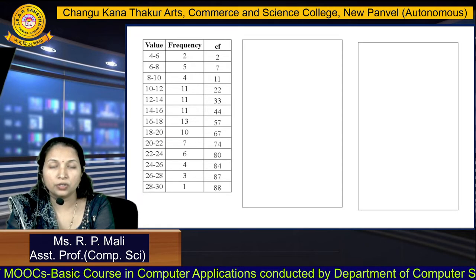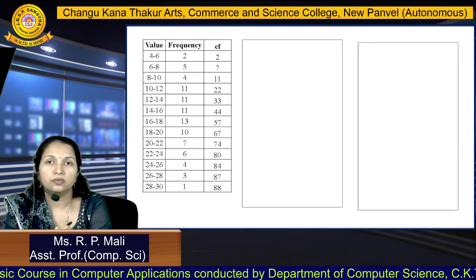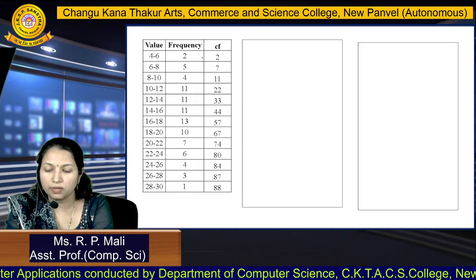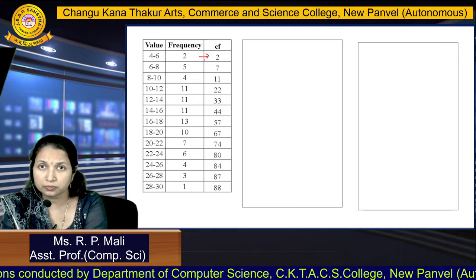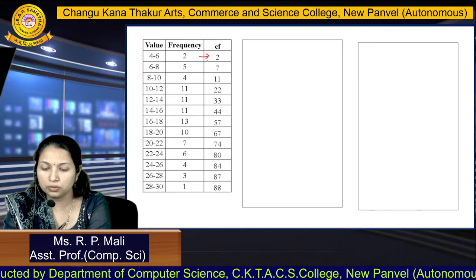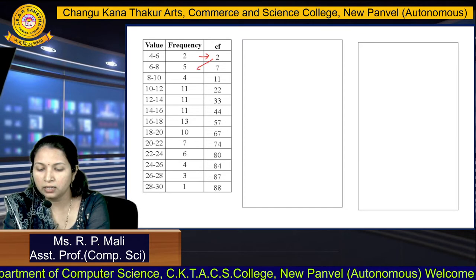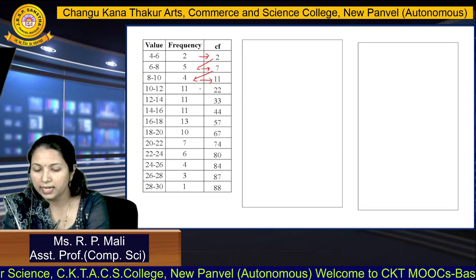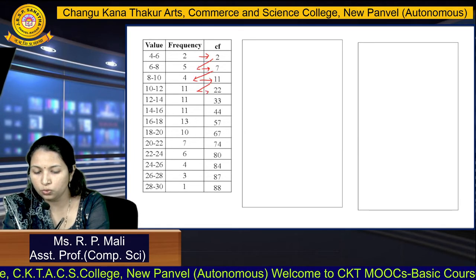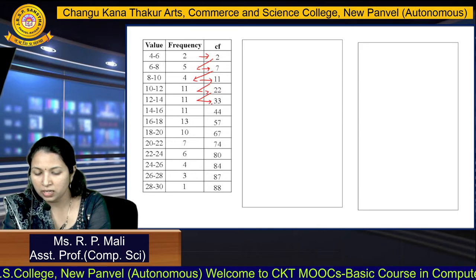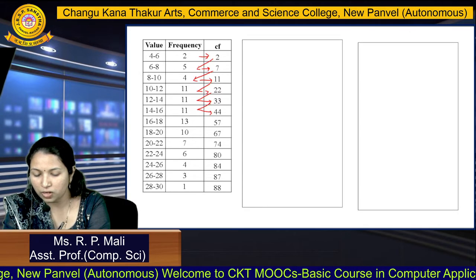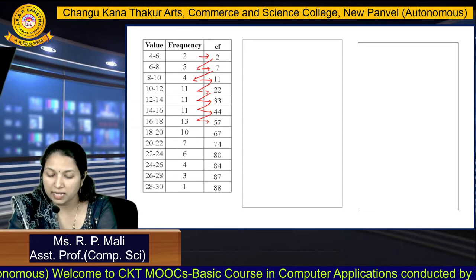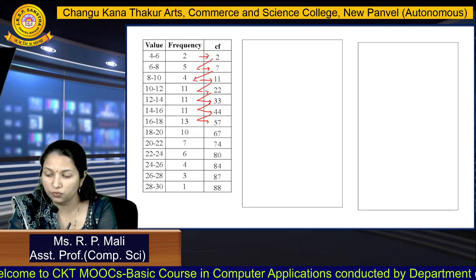For the first quartile, you are going to find the cumulative frequency — this is the less than cumulative frequency. We write 2 as it is, then 2 plus 5 is 7, 7 plus 4 is 11, 11 plus 11 is 22, 22 plus 11 is 33, 33 plus 11 is 44, 44 plus 13 is 57.